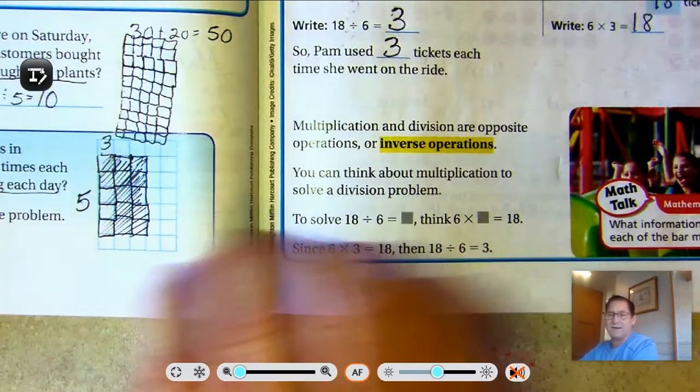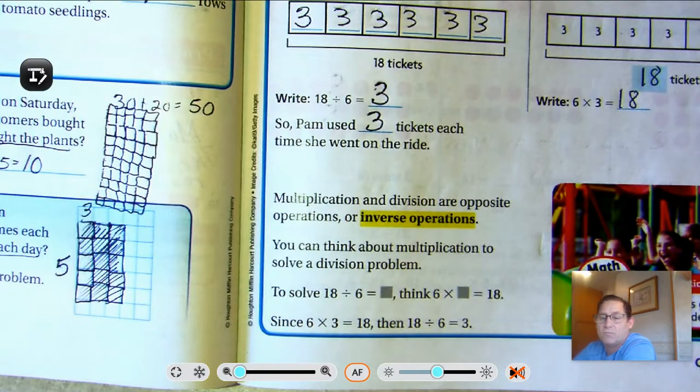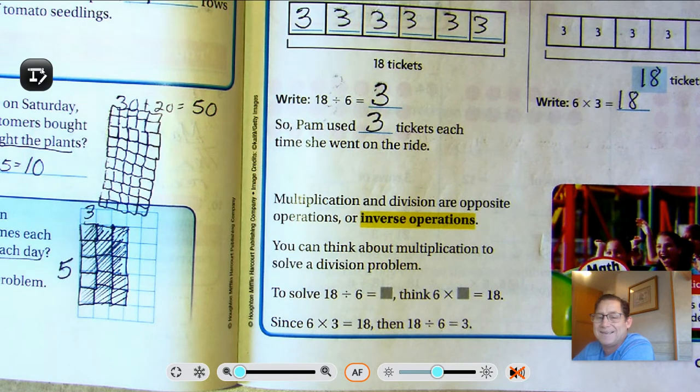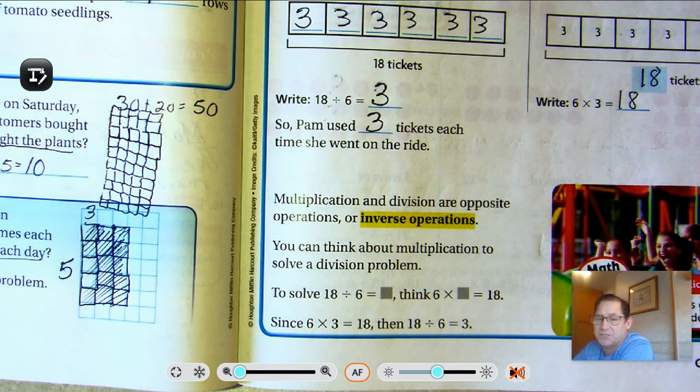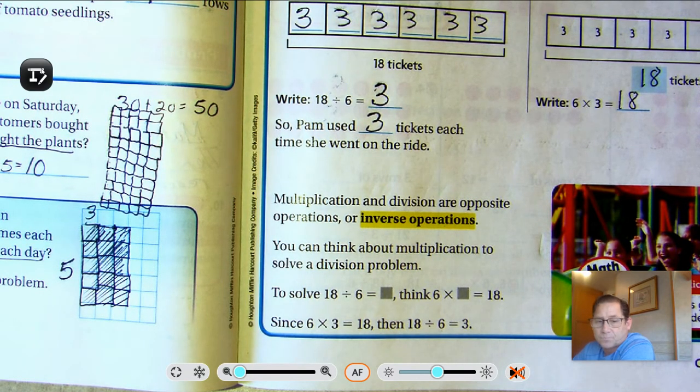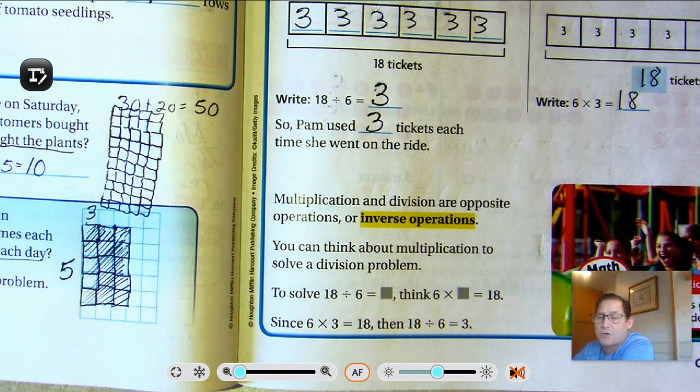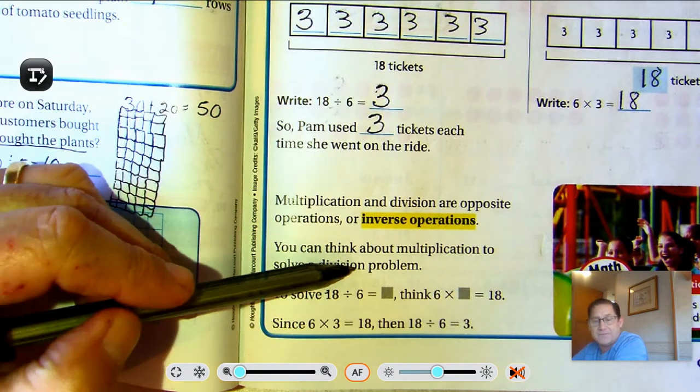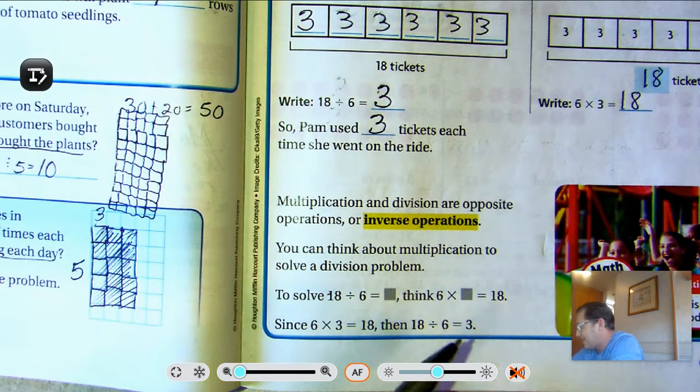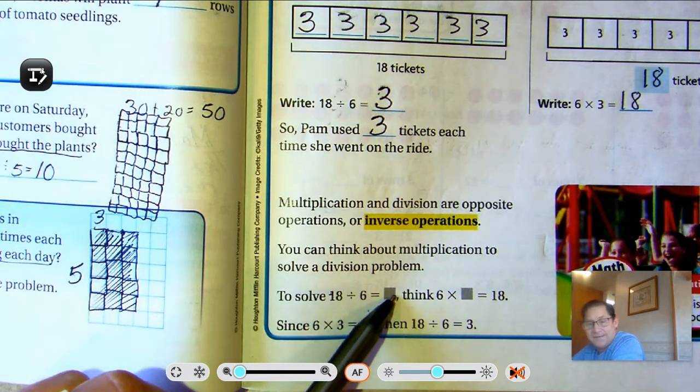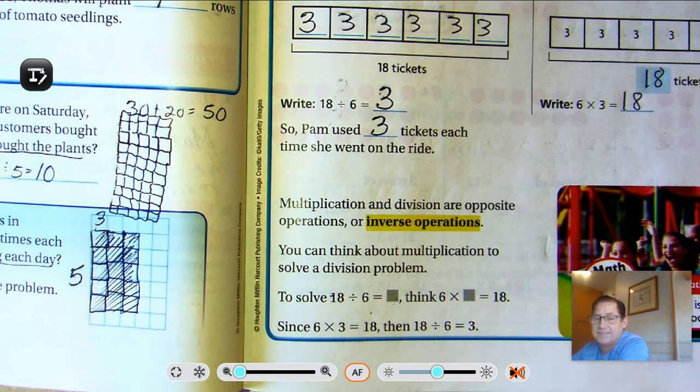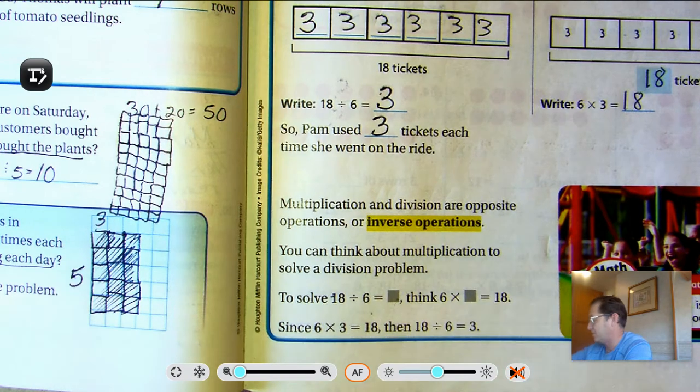So how do these two problems relate to each other? Well, multiplication and division are opposite operations or inverse operations. You can think about multiplication to solve a division problem. So when we were looking at this earlier, we said 18 divided by six. Well, that's the same as saying six times something is 18. Six times three is 18. So 18 divided by six is three.